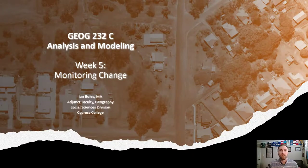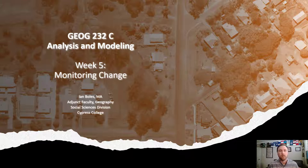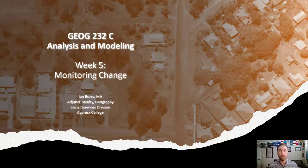Hello Geography 232 students. Welcome to week five of analysis and modeling. This week we're going to be talking about monitoring change. We'll have a quick review of multi-spectral imagery, talk about where to find multi-spectral imagery, cover a couple of different data sources, and then get into change detection. There are a few different techniques we can apply to detect change on the landscape, and that will segue right into your lab for the week.